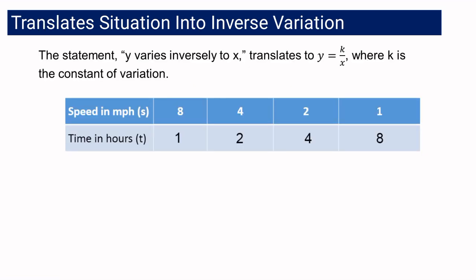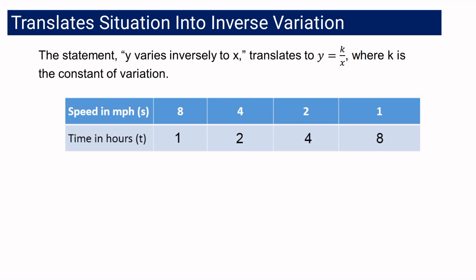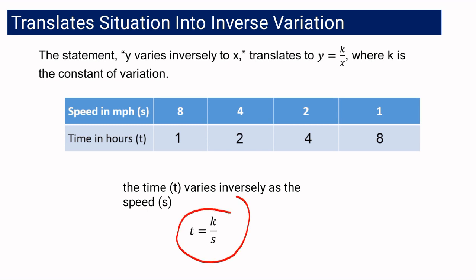The statement 'y varies inversely as x,' if we translate that, becomes y equals k over x, where k is the constant of variation. The constant of variation in direct variation is the ratio, while in inverse variation, the constant of variation is the product. Considering our previous situation, we can say that time varies inversely as speed, which translates to t equals k over s.